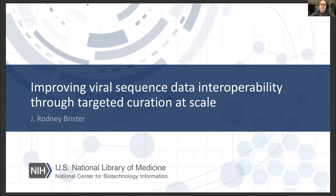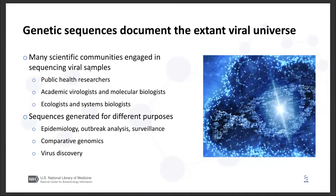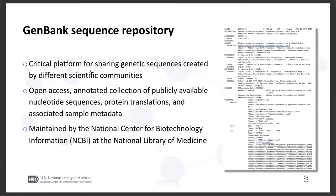Thank you, and I'd really like to thank the organizers for giving me the opportunity today to talk about improving viral sequence data interoperability through targeted curation at scale. There are a number of scientific communities engaged in sequencing viral samples, including public health researchers, academic virologists and molecular biologists, ecologists and systems biologists. Each of these different communities is generating sequence data for different purposes and use cases, including epidemiology, outbreak analysis and surveillance, as well as comparative genomics and viral discovery. The folks creating this viral sequence data are typically making it available through the GenBank Sequence Repository, a critical platform for sharing genetic sequences across the globe — an open-access annotated collection of publicly available nucleotide sequences.